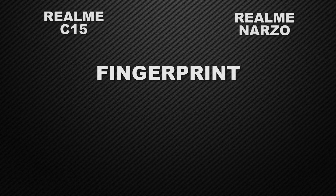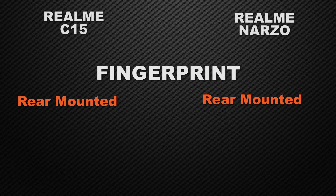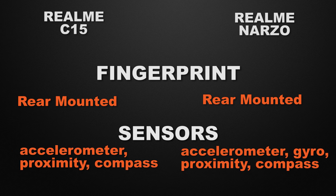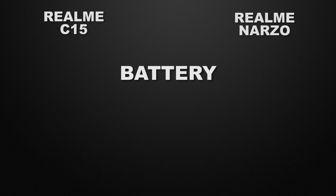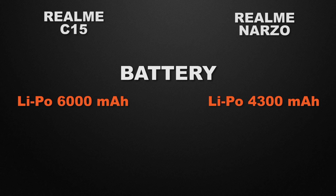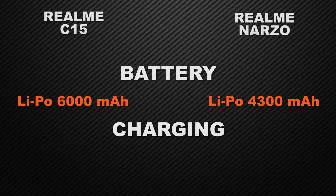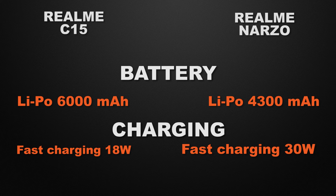Both devices have a rear-mounted fingerprint scanner — it's a tie. For sensors, both have accelerometer, proximity sensor, and compass, but the Narzo also has a gyroscope. For battery, the C15 has a large 6000mAh battery while the Narzo has 4300mAh, so the C15 wins on battery capacity. For charging speed, the C15 supports 18W fast charging but the Narzo supports 30W, so Narzo wins on charging speed.